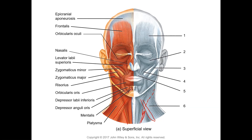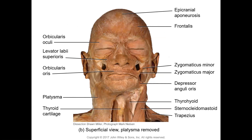Zygomaticus major and minor are muscles primarily used when we smile. The orbicularis oris is the muscle you use when saying the letter 'O'. The depressor labii inferioris depresses the lower lip. The depressor anguli oris contracts to give the sad-face expression because it pulls the angles of the mouth downward. The mentalis muscle is right on the tip of the mandible.